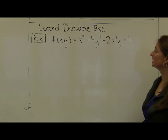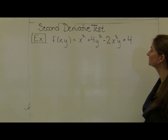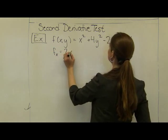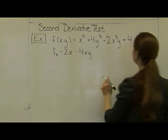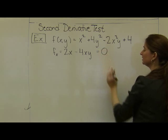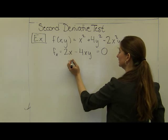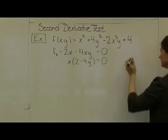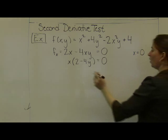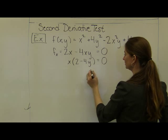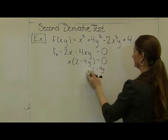Let's use the second derivative test to evaluate the maximum and minimum values of f(x, y) = x² + 4y² − 2x²y + 4. To find critical points, we take partial derivatives. The partial with respect to x is 2x − 4xy. Factoring out x gives x(2 − 4y) = 0, so either x = 0 or y = 1/2.